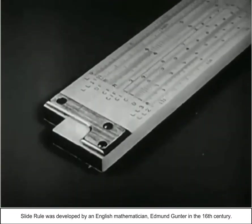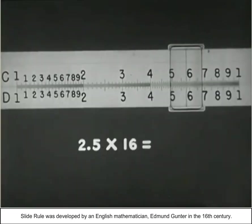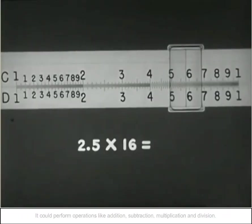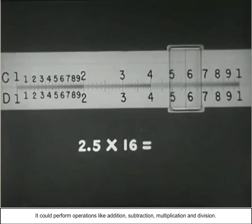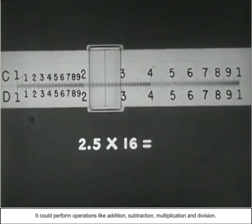Slide rule was developed by an English mathematician, Edmund Gunter, in the 16th century. It could perform operations like addition, subtraction, multiplication and division.